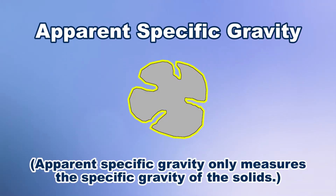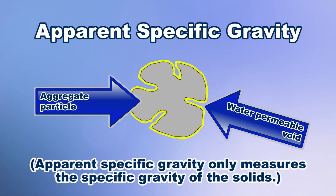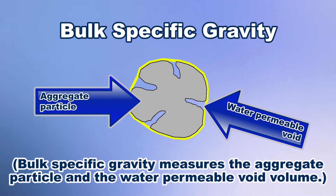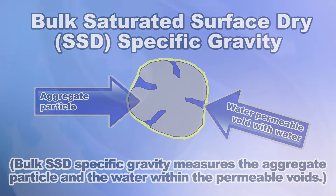Apparent specific gravity is a measurement of the volume of the aggregate particle, not including the volume of water permeable voids. Bulk specific gravity is a measurement of the volume of aggregate particles as well as the volume of the water permeable voids. Bulk saturated surface dry specific gravity is the measurement of the overall volume of the aggregate particle as well as the volume of the water within the voids.